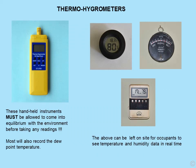Thermohygrometers in general: the handheld thermohygrometer is very good for snapshot surveys — that is, a survey when you're in the property. However, these handheld instruments must be allowed to come into equilibrium with the environment before taking any readings; if brought in from a very cold car into a warm building, you'll get unreliable readings until they reach room temperature. Most of these meters will also record the dewpoint temperature. The small gadgets on the right are little thermohygrometers which can be left in the room for occupants to see temperature and humidity data in real time.